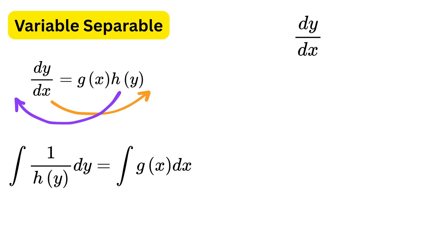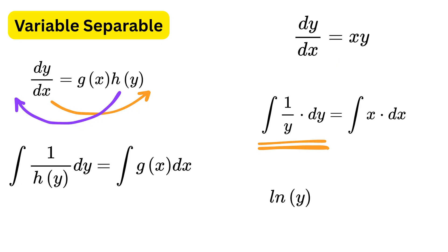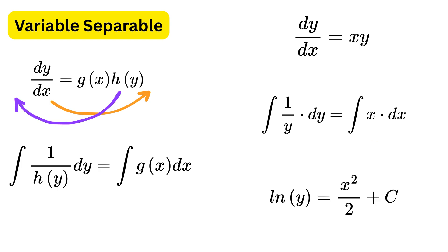For example, if dy/dx equals x times y, then move the y part to the left, producing (1/y) dy equals x dx. Now integrate the left with respect to y and the right with respect to x. The left integral becomes the natural log of y and the right integral becomes x squared divided by 2 plus c. Never forget this constant of integration c.